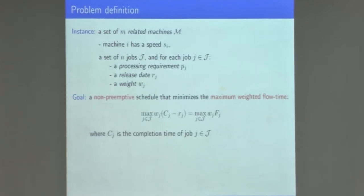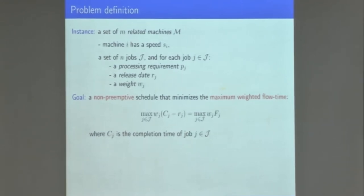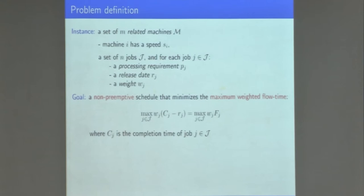The objective is to minimize the maximum weighted flow time, which is essentially the response time — how long the job remains in the system. If a job completes at time C_j, then C_j minus R_j is the quantity the job remains in your system, including waiting time and processing time. We minimize the maximum — the L-infinity norm. There is prior work on the L1 norm and general Lp norm, and specifically on this L-infinity norm where we can improve results using techniques from previous works.